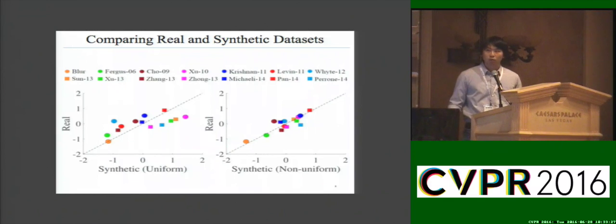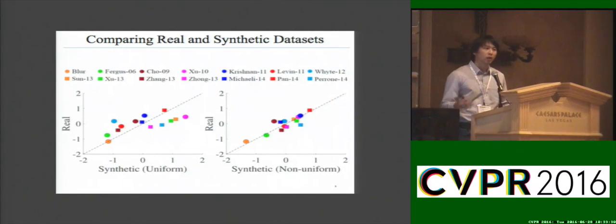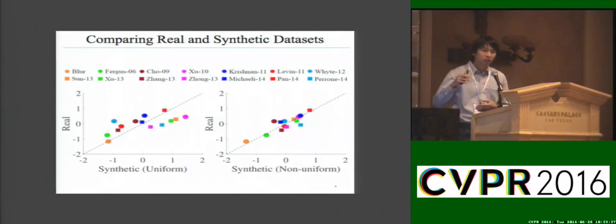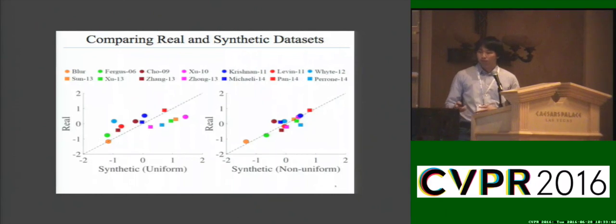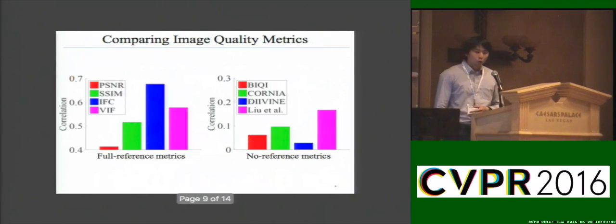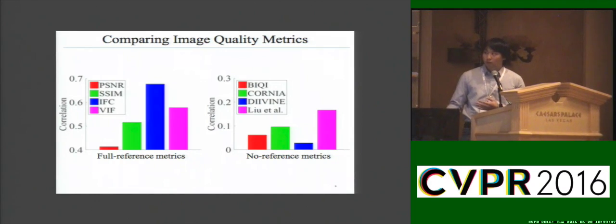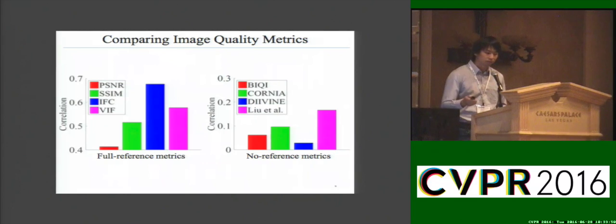We also conduct a baseline user study on a synthetic dataset for both uniform and non-uniform blurred images. We show the scatter plot of the BT score between the real and synthetic dataset to understand the performance difference among datasets. We also compute a correlation between human subject scores and several image quality metrics, including full-reference and no-reference metrics.